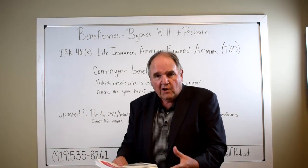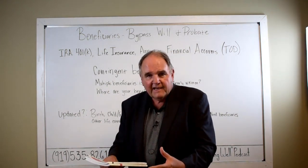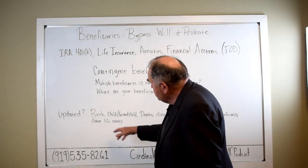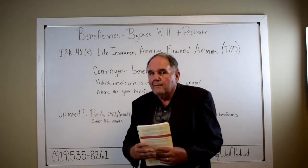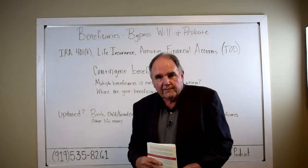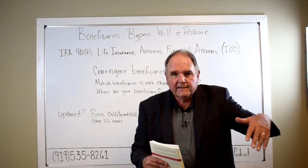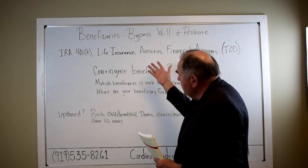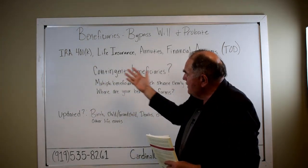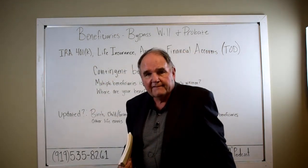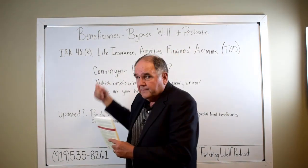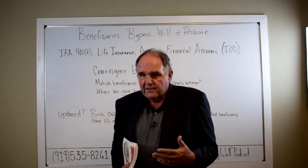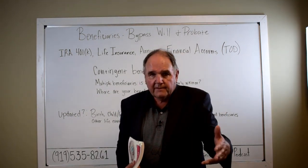Through the financial planning process, when we implement new products or financial instruments, we fill out those beneficiaries on new accounts exactly according to what you want, and then it's our job to keep them updated. People don't think about this, or they did their will with a lawyer and think they covered everything — but this is a separate thing. It has nothing to do with the will. Named beneficiaries get everything settled 30 to 60 days after you die, versus a year or more through probate.